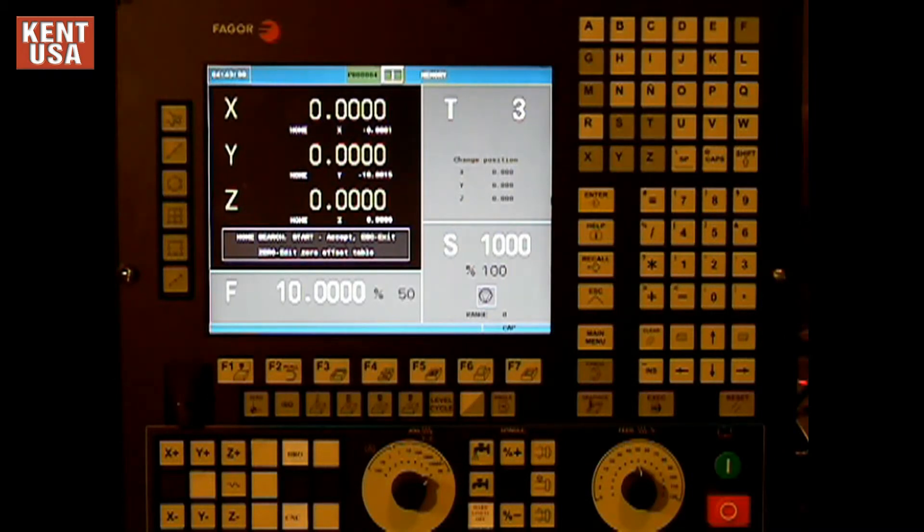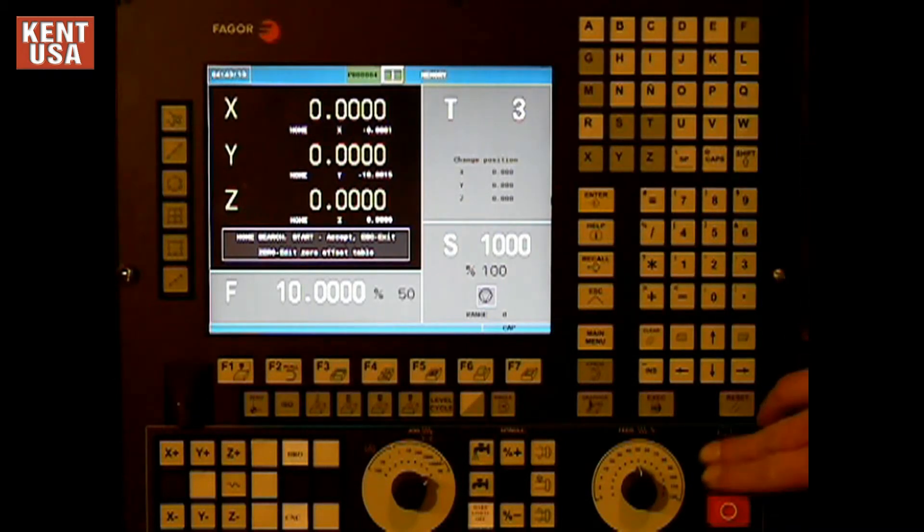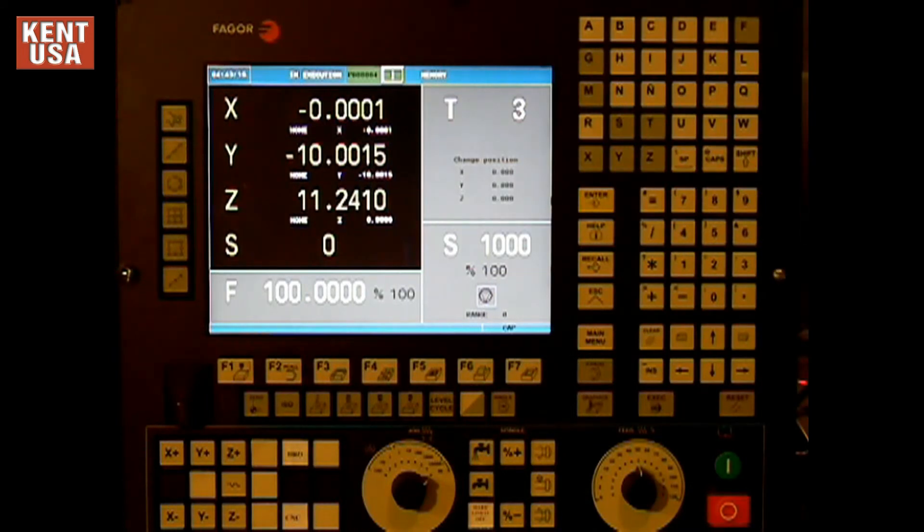To execute the home search, press cycle start. At this time, the CNC will execute the subroutine associated with the home search.